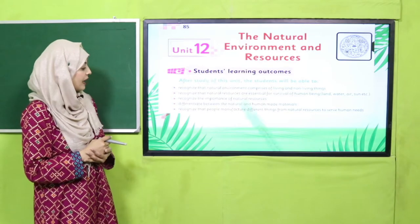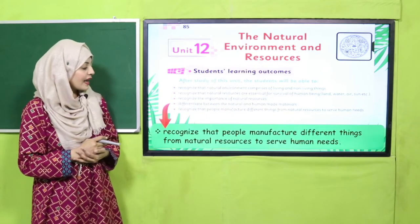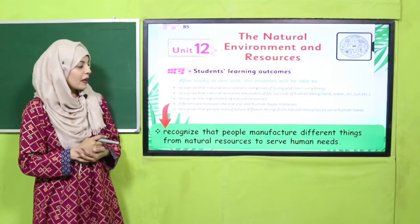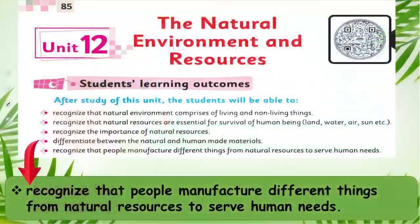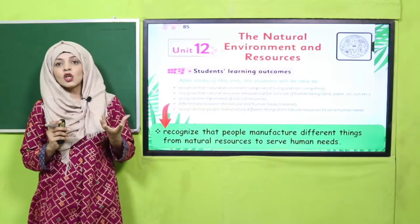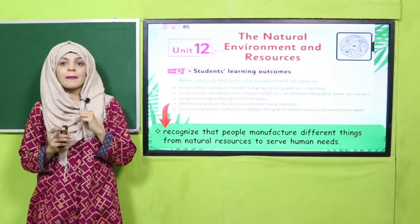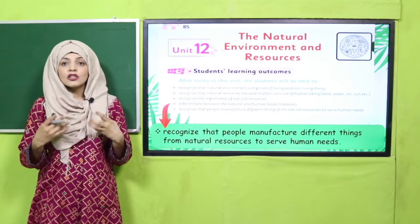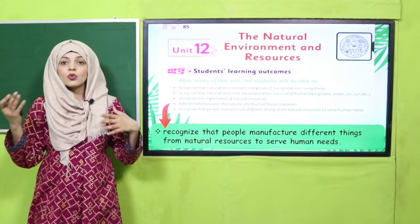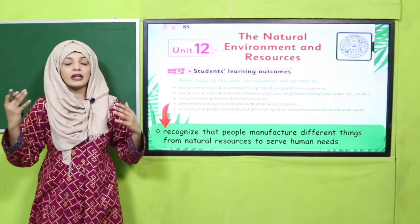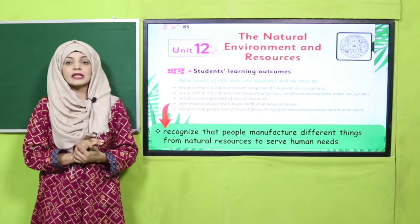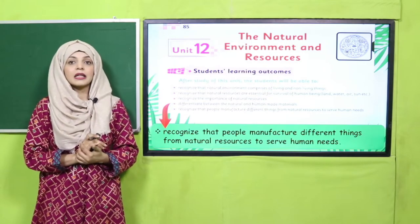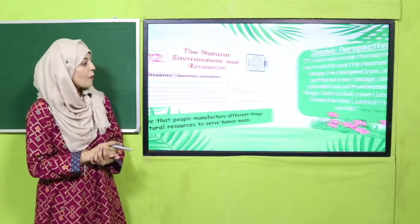Let's quickly look at the student learning outcome for today, given on page number 85. Today we will recognize that people manufacture different things from natural resources to serve human needs. All man-made things are made using natural resources in order to fulfill our needs and necessities.